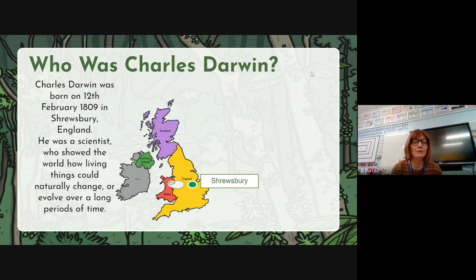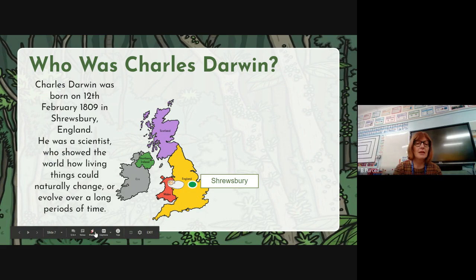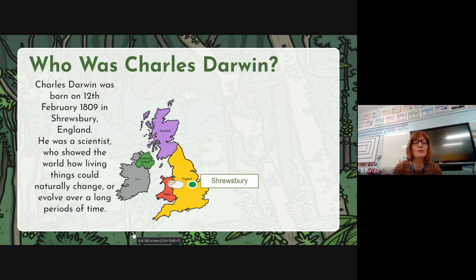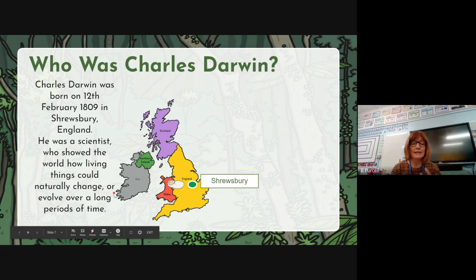But I improved this. I worked on my second paragraph. It now says: 'Charles Darwin was born on the 12th of February 1809, in Shrewsbury, England.' I've kept that information the same, but I improved the second part. I've used the pronoun 'he' — 'He was a scientist who showed the world how living things could naturally change or evolve over a period of time.' As I did more research about Charles Darwin, I changed what I said about him, making sure I used subject-specific words like 'naturally change' and 'evolve.'